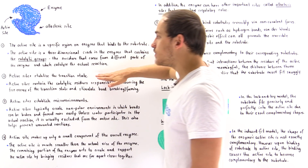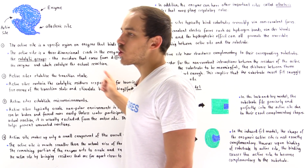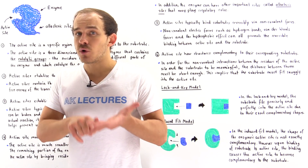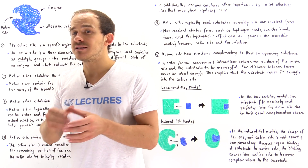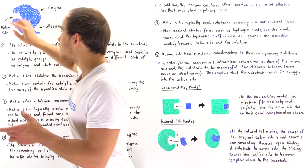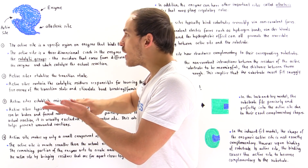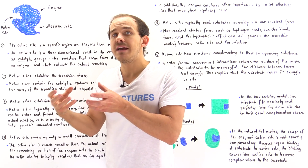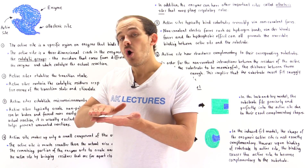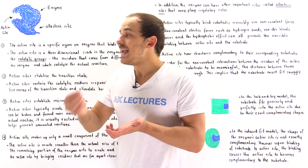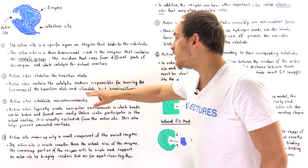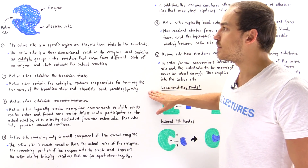This leads us into property number two: active sites are responsible for stabilizing the transition state as well as forming and breaking the particular bonds involved in that chemical biological reaction. Inside the active site we have residues responsible for stabilizing and lowering the energy of the transition state, which is precisely what speeds up the reaction. We also have catalytic groups responsible for stimulating the breaking and forming of bonds.